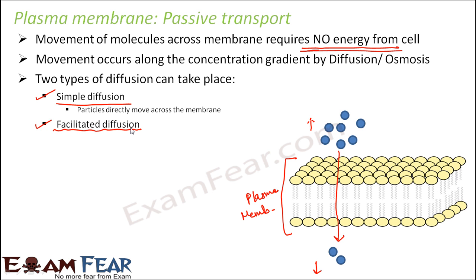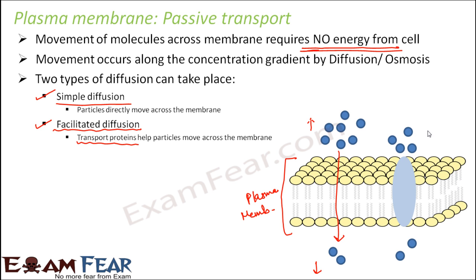Facilitated diffusion involves a facilitator — transport proteins help particles move across the membrane. Even if concentration is higher on one side and lower on the other, some particles cannot move directly; they need transport proteins already present in the cell membrane to carry them through. These transport proteins act as facilitators, hence the name facilitated diffusion.